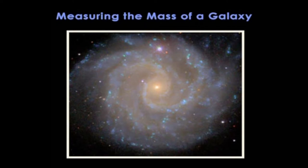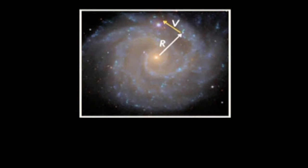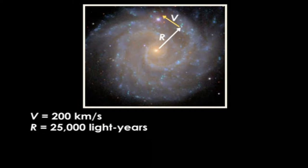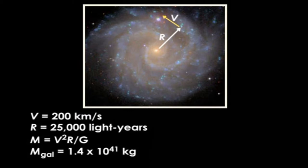My second example is much grander. Here's a typical galaxy — stars in its disk move approximately on circular orbits. It's possible to measure the orbit's speed and size, and let's say they are 200 km per second and 25,000 light-years. You simply plug these numbers into our equation, M equals V squared R over G, and we get 1.4 times 10 to the 41 kg, or a little over 70 billion times the mass of the Sun. You've just measured the mass of a galaxy. We will never go to visit the Sun or a galaxy, but using Newton's laws of gravity and motion, we can confidently measure both of their masses.